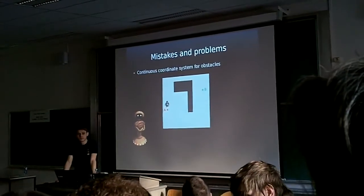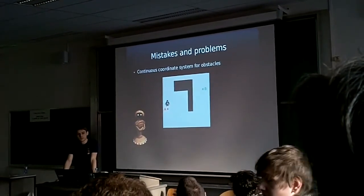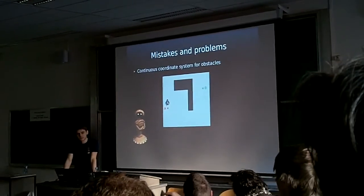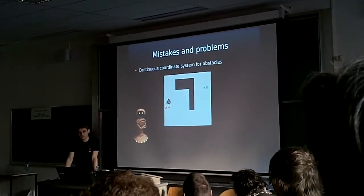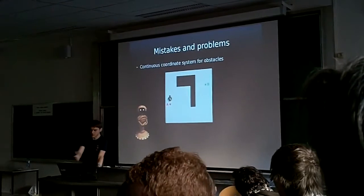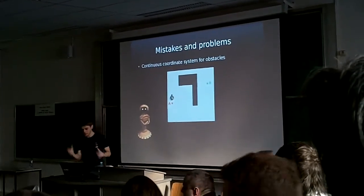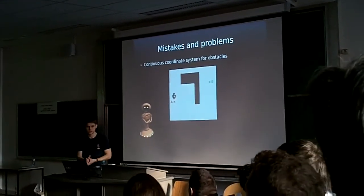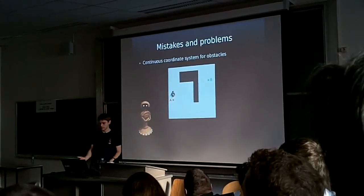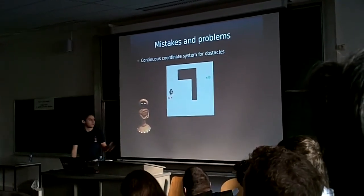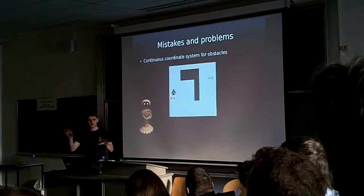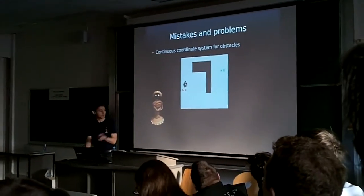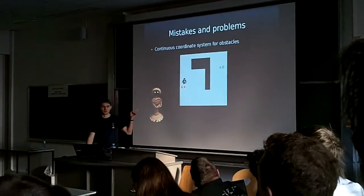An audience member comments there is a nice middle ground between the two approaches, where you have floating point coordinates for the actors but the map is a grid. The speaker acknowledges this but notes they cannot change it at this point. There are obviously many ways of doing collision detection, but the approach they chose was wrong — that's the point.